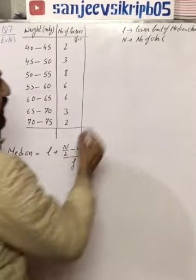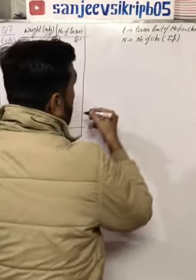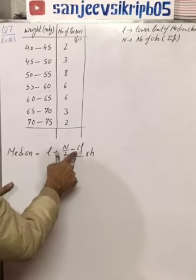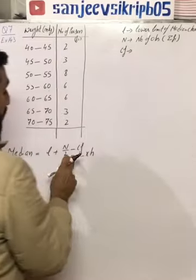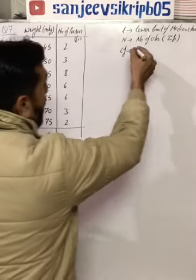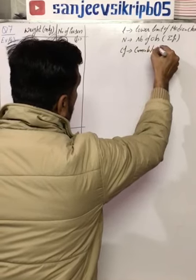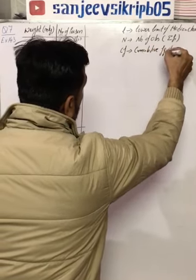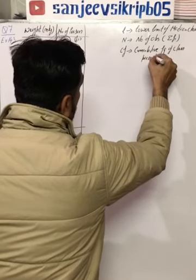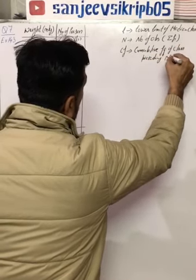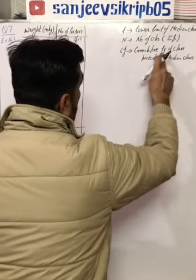Number of observations, you can say the sum of all frequencies, that is summation FI. Then is CF. This is a very important term in this question. CF is the cumulative frequency of class preceding median class.